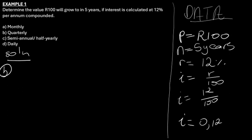Determine the value R100 will grow to in 5 years. If this R100 will grow, then we are appreciating, so we need to use the formula with the plus. Now if the interest is calculated at 12% per annum compounded, that means we need to use the compound formula.